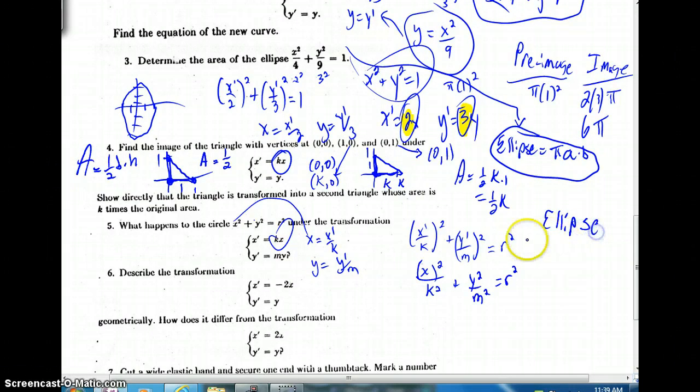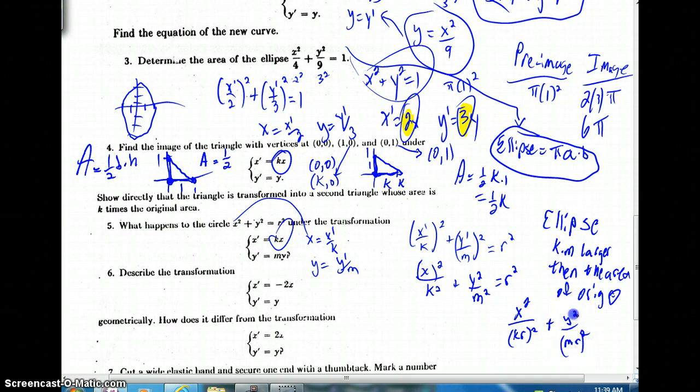It's going to be, of course, an area that's k times m larger than the area of the original circle. So that's really what we've got here. Writing it officially as an ellipse, we could divide both sides by r². I hope you can see if we multiply by r² down there, we could even say this is x over (kr)² plus y over (mr)² equals 1. Okay, so it does, in fact, become an ellipse.